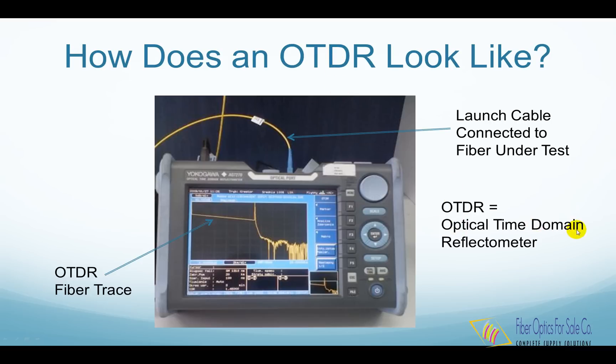OTDR stands for Optical Time Domain Reflectometer. Its name means that an OTDR checks the reflected light from the fiber under test along time, shown as the yellow trace line in this picture.